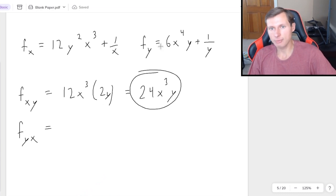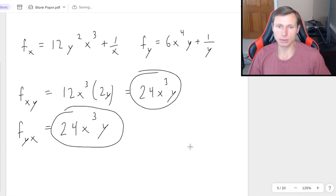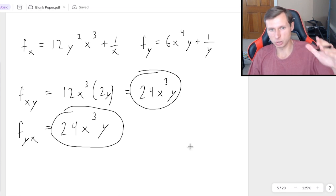Then if I do fyx, which normally I don't need to do this because I know the answer is just going to be this. But just to prove it anyway, you're looking at fy, this guy, and you're taking the derivative with respect to x, specifically the x to the fourth. So that means it's going to be 6 times 4, power rule, 24x cubed times y. And again, derivative of 1 over y is 0 because it doesn't have x in it. Therefore proving that Clairot's theorem was correct, I guess he's a pretty smart guy. And yes, the two partial derivatives are equal to each other.